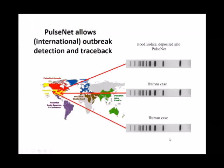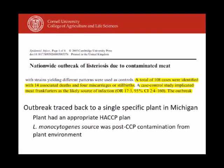With these fingerprinting tools, we can fingerprint Listeria from human cases. If two humans are infected with the same fingerprint, we can interview those people, find the common food they consumed, hopefully find the food, test it, and if we find Listeria monocytogenes from that food, we can compare the fingerprint from the food to the human. If the food fingerprint of Listeria is the same as the human fingerprints, we have a fairly convincing case that this food caused these human cases, if supported by epidemiology.